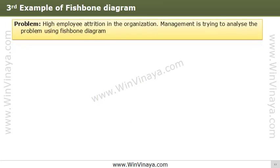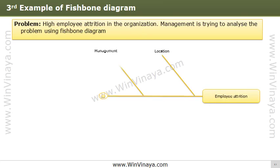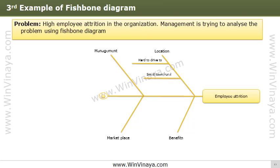In the last fishbone example, we use the diagram to solve a problem at the organization level. Consider high employee attrition — management is using a fishbone diagram to address this issue. Categories identified include location, management, marketplace, and benefits. Under location, causes could be that the office premises are in a location that is hard to drive to, too far to commute, or situated in a small town or rural area.